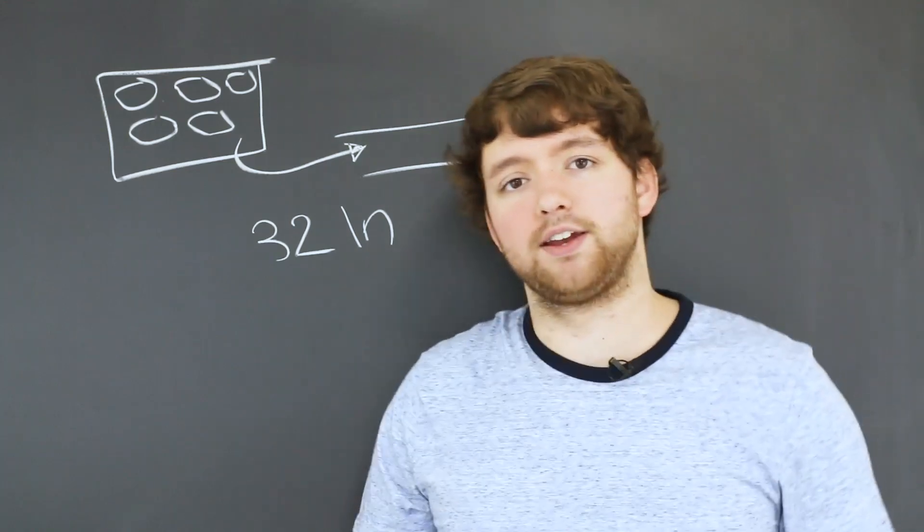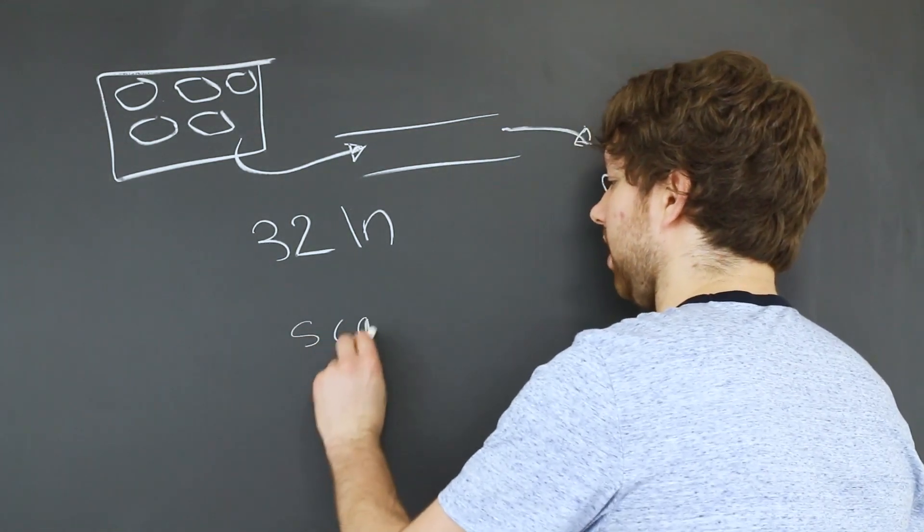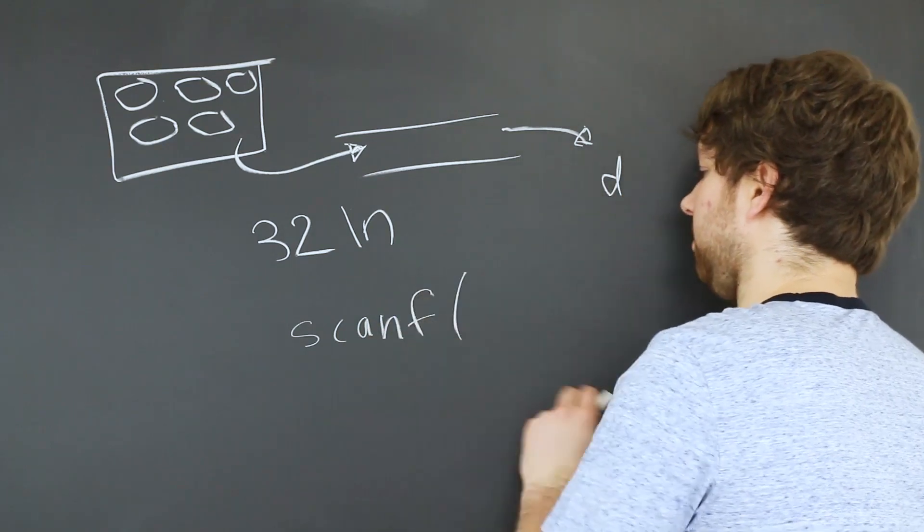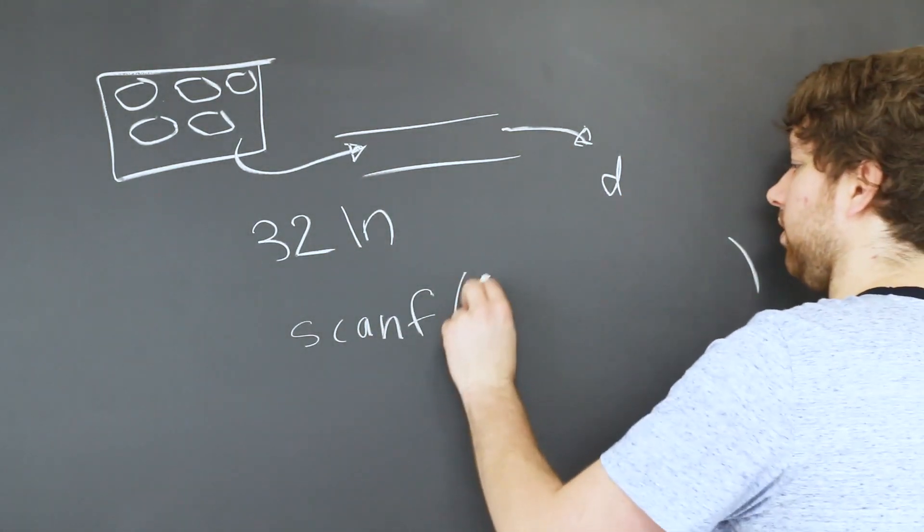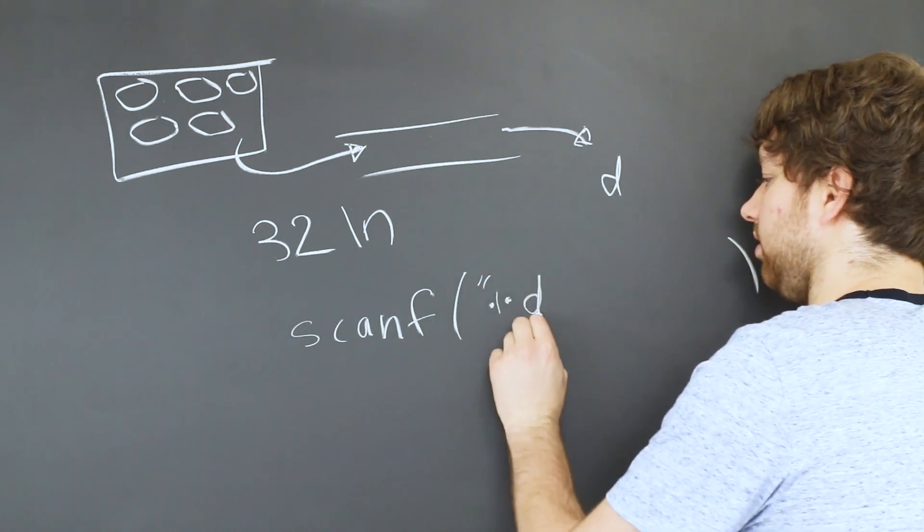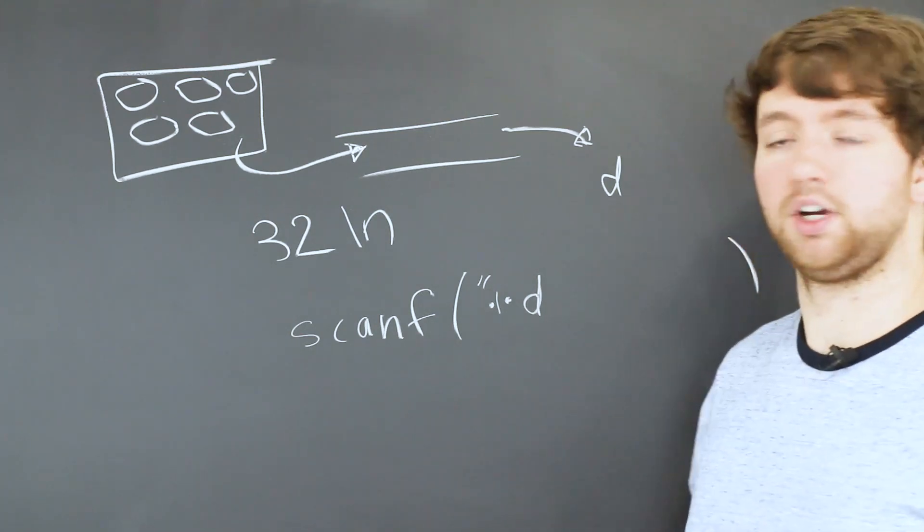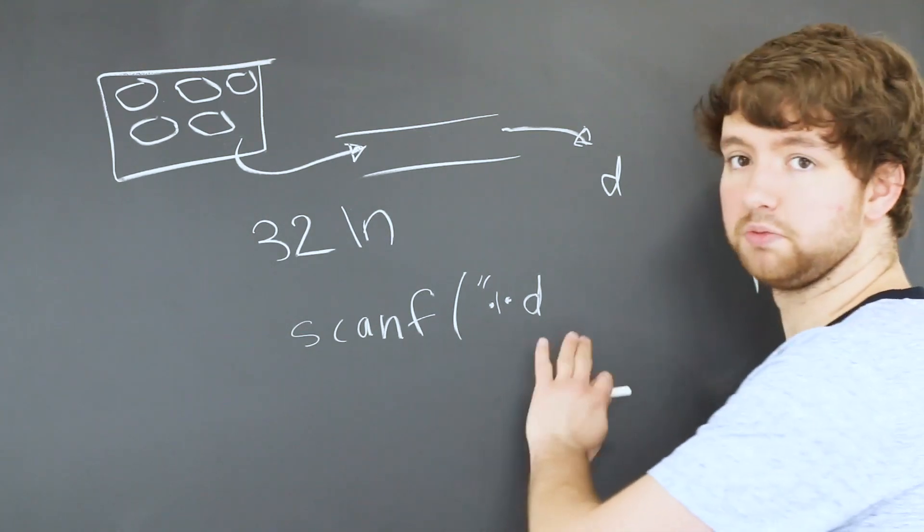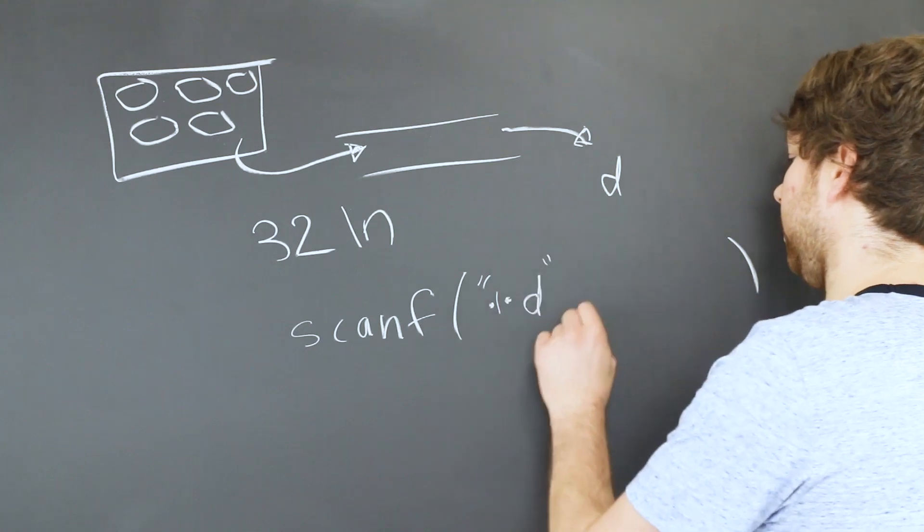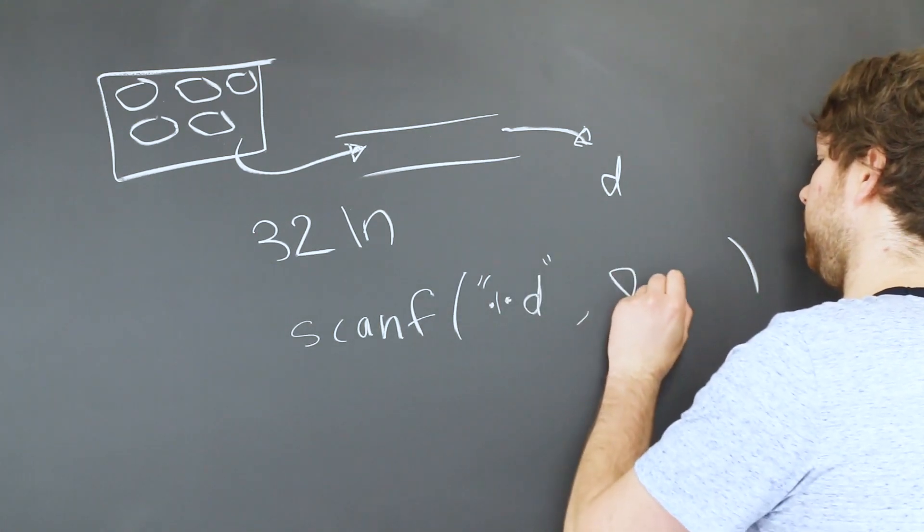So how does scanf work? Well, if we say scanf and then we pass in a string expression such as %d, this means we're going to get some integer data. You could also use %i. And then we're going to store that in the variable d.